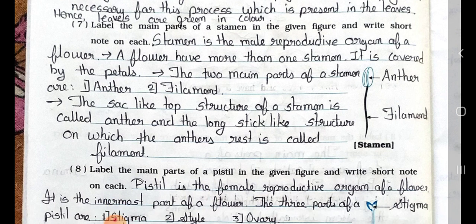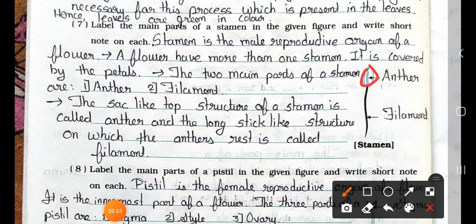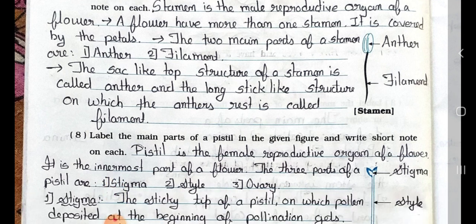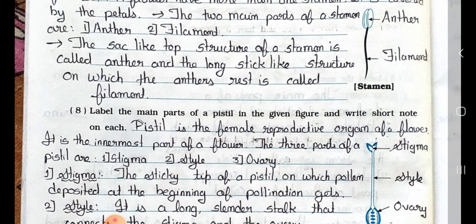Question 7: Label the main parts of a stamen in the given figure and write short notes on each. Answer: The stamen is the male reproductive organ of a flower. A flower can have more than one stamen. It is covered by the petals. The two main parts of a stamen are number 1 anther and number 2 filament. The sac-like top structure of a stamen is called the anther, and the long stick-like structure on which the anther rests is called the filament.